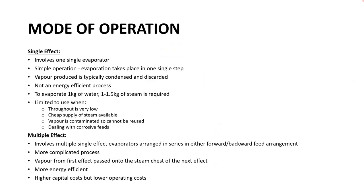You can also have multiple effect evaporators, which essentially involve using multiple single effect evaporators arranged in series in either a forward or backward fed arrangement. This way of operating is more complicated; however, since the vapour produced in the first effect is then passed to the steam chest of the next effect in line, the process is overall a lot more energy efficient and less wasteful. Therefore the operating costs are much lower, despite the higher capital costs of having more evaporators.